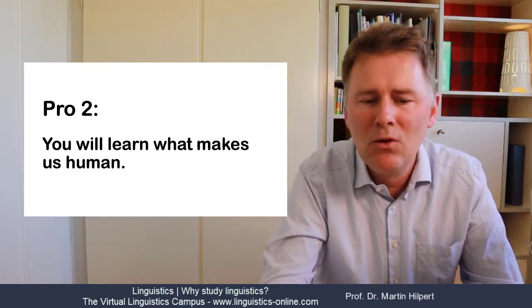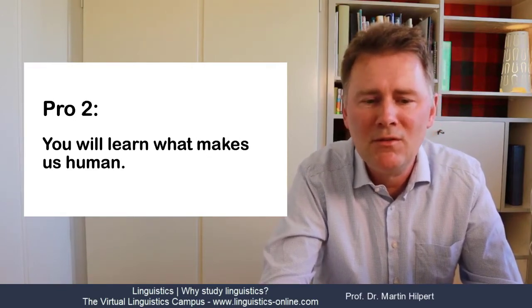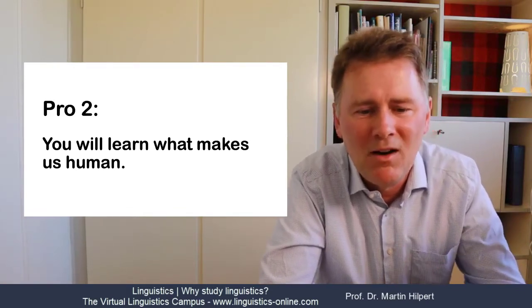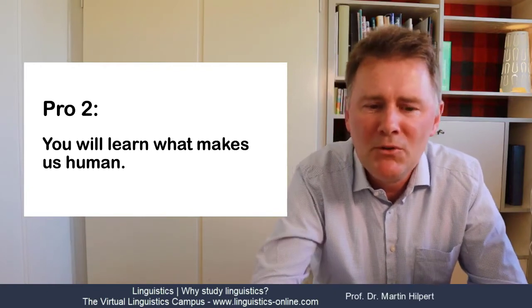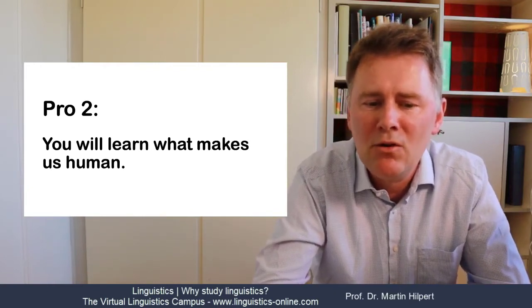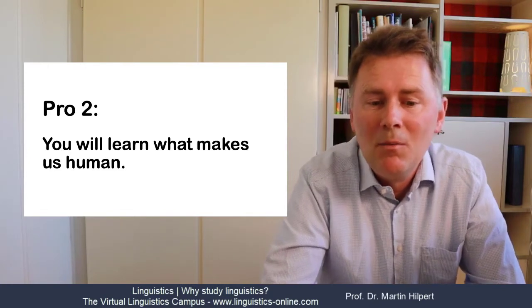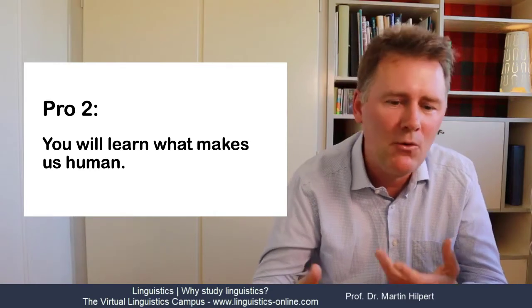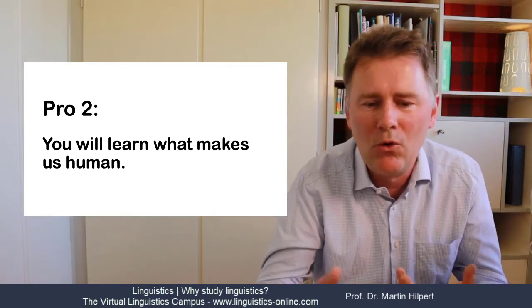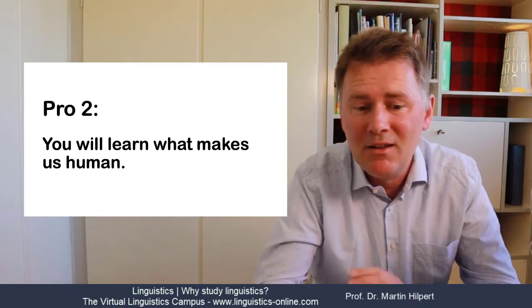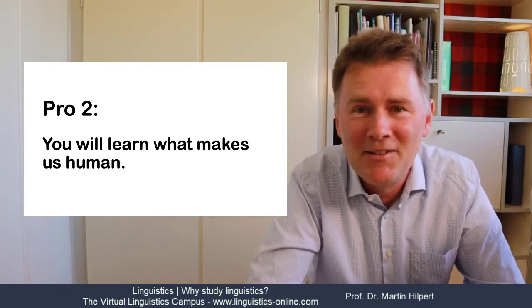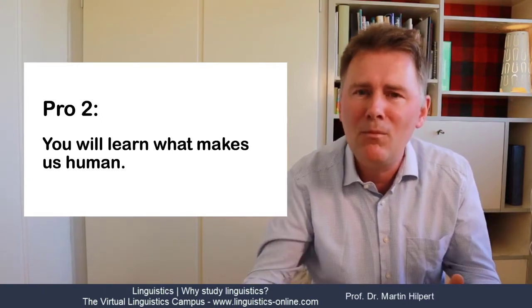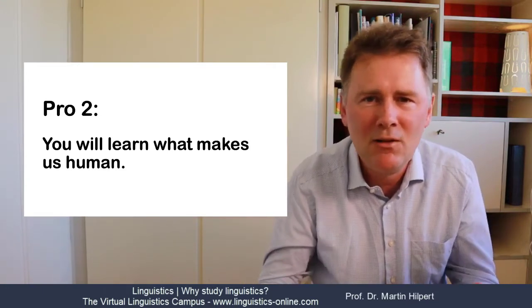Reason number two, you will learn what makes us human. There's only one species on the planet that has language and that will be us. Now very importantly, animals communicate. Animals can even learn to use a large number of symbols. But animals don't communicate in order to wish you a happy birthday or crack a joke or tell a story from back in the day. They don't walk in on you and tell you, hey man, I like your haircut, that's nice.